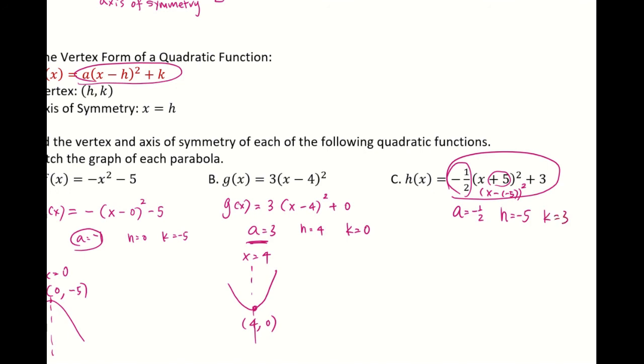You will have a graph that is facing downwards because your a is negative. Your vertex is (negative 5, 3), and you will have a graph that's facing down. That's your parabola.